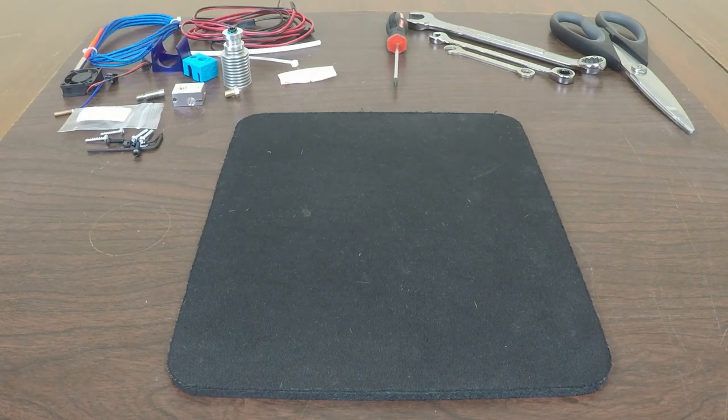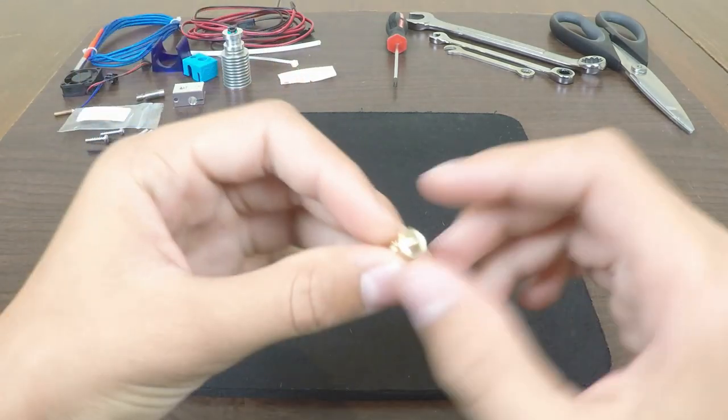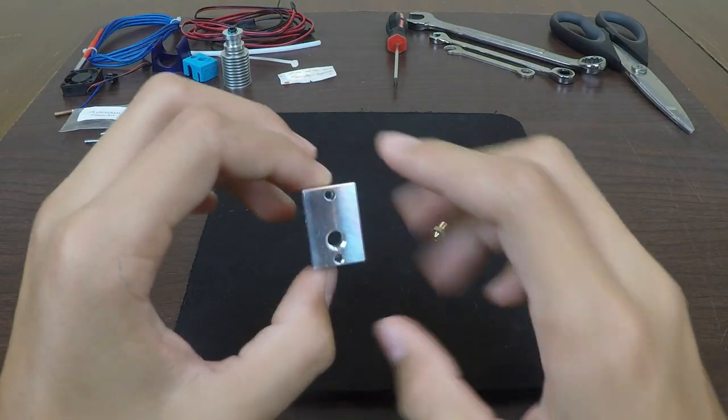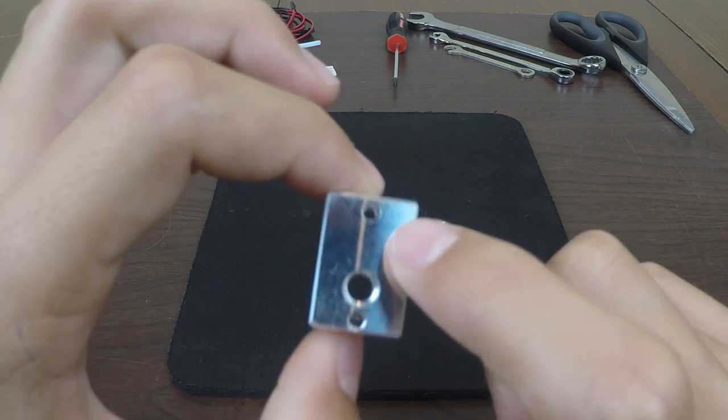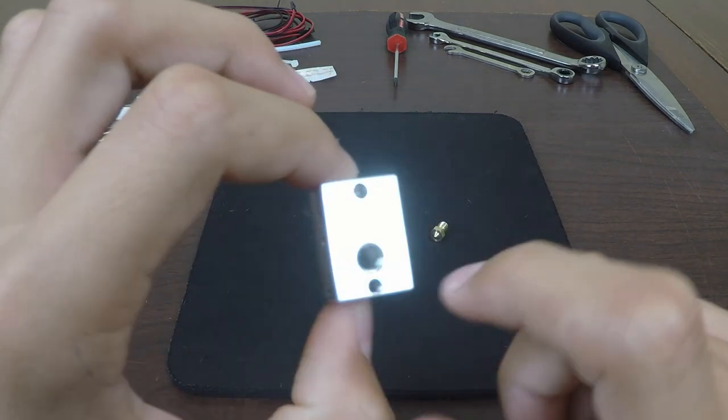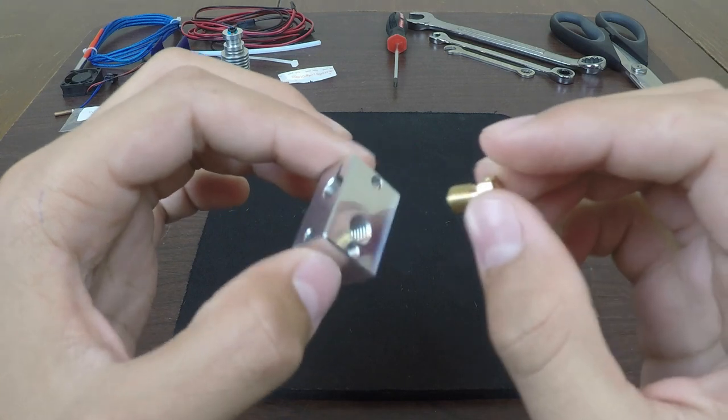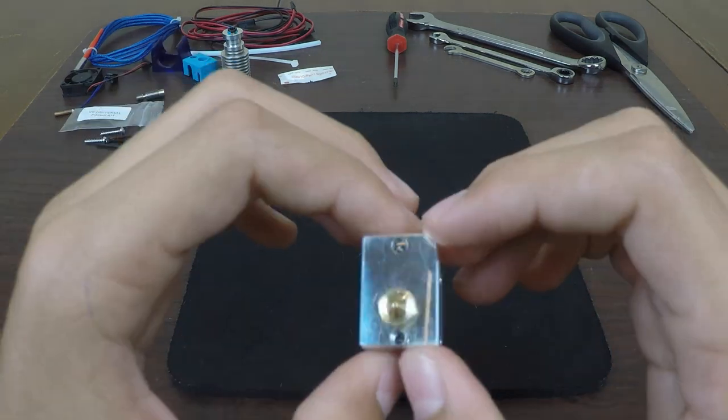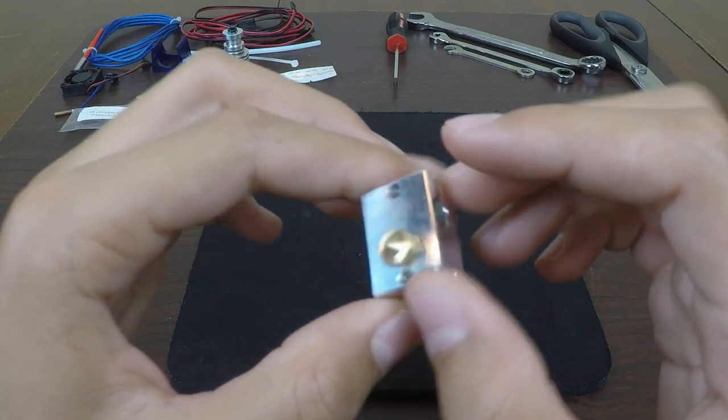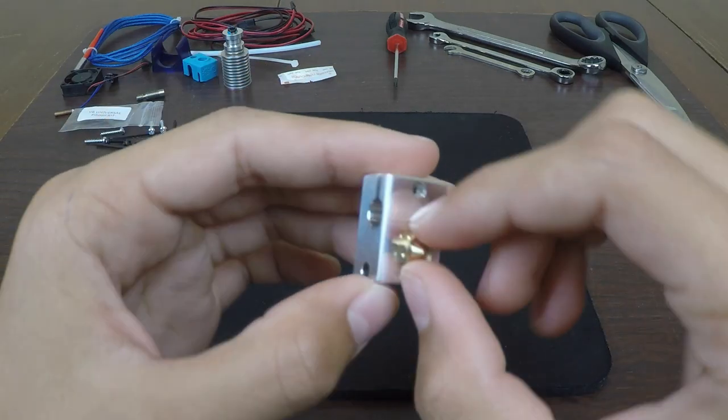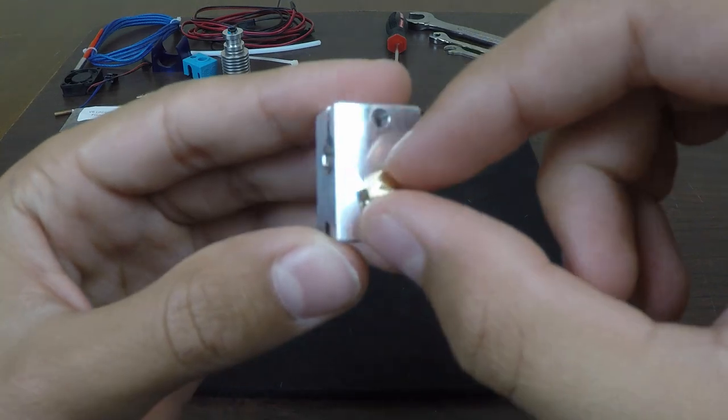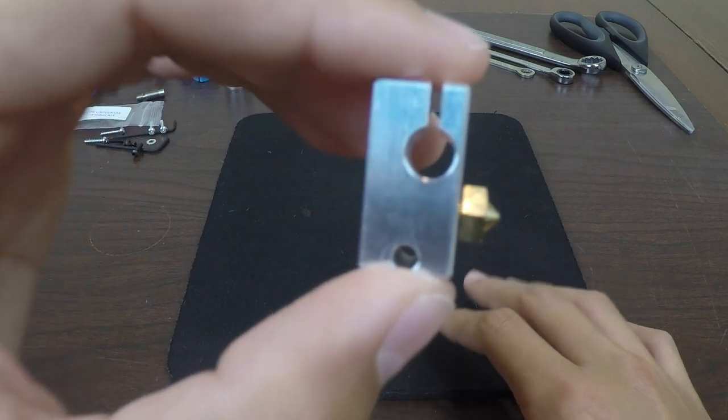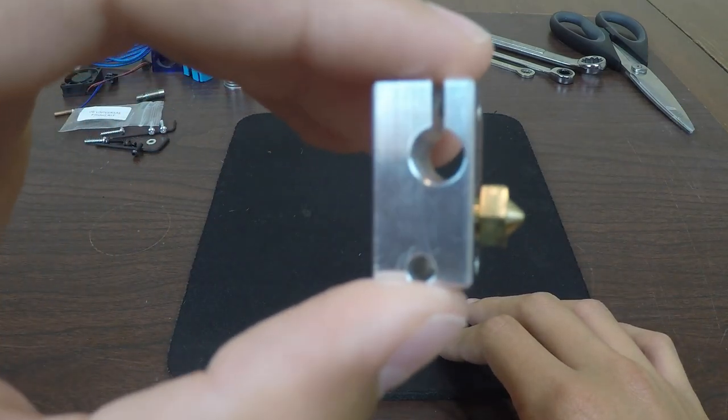The first thing that you're going to want to do is go ahead and grab your 0.4mm nozzle and your heater block, and you're going to choose the side that has these two holes in it and then the one main area. You're going to want to hand tighten your nozzle into this area and then go all the way down. Once you get it to a point where it's just barely flush, you're going to want to grab it on top like this and then just make a quarter turn outwards.